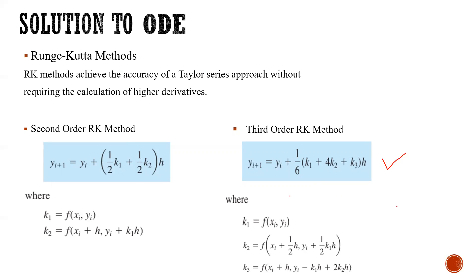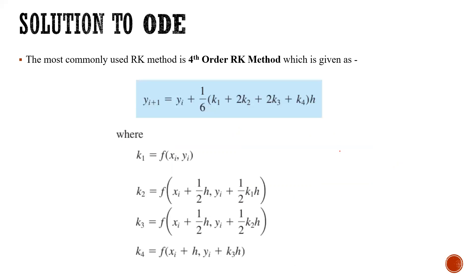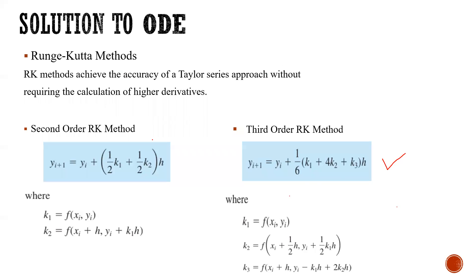The most commonly used RK method is fourth order RK method, which is given as y_{i+1} equals y_i plus 1/6 times (k_1 plus 2k_2 plus 2k_3 plus k_4) times h. One thing to note is that the coefficients of k_1, k_2, k_3, k_4 sum to 1 in all the methods. Here also, 1/6 plus 2/6 plus 2/6 plus 1/6 equals 1.